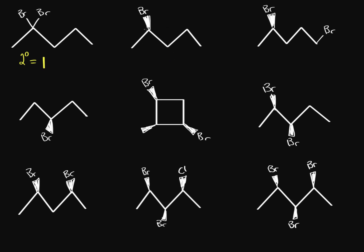What about this molecule? Well, we have these carbons — just like the last molecule, they can't be chiral carbons. But this one has a bromine, a methyl, the rest of the chain, and then a hydrogen. So that's four different groups, which means we have 2 to the one — we have two stereoisomers.